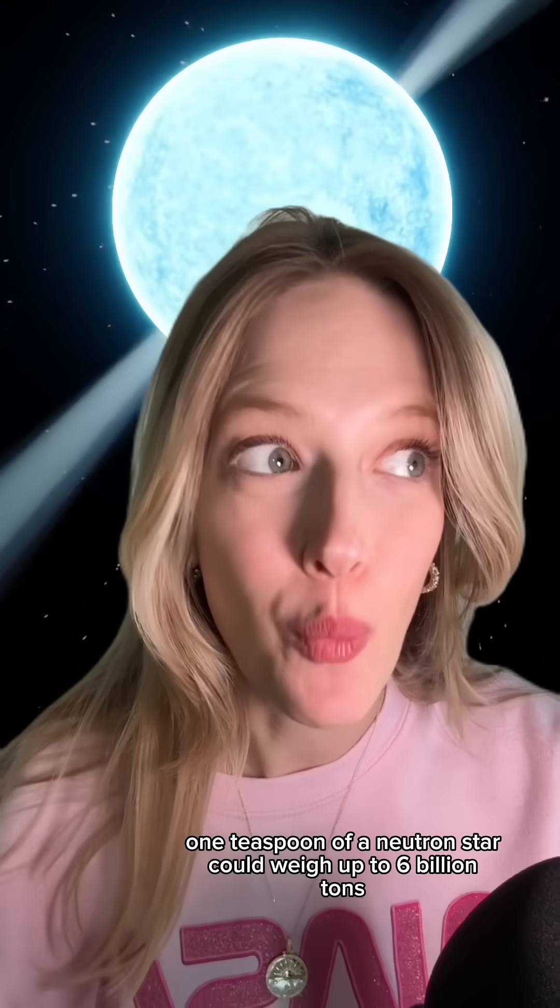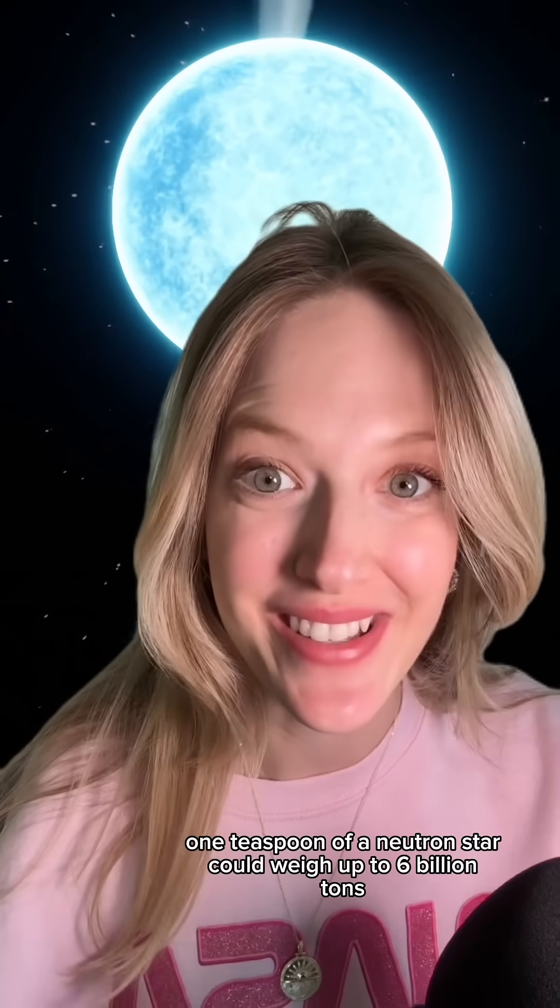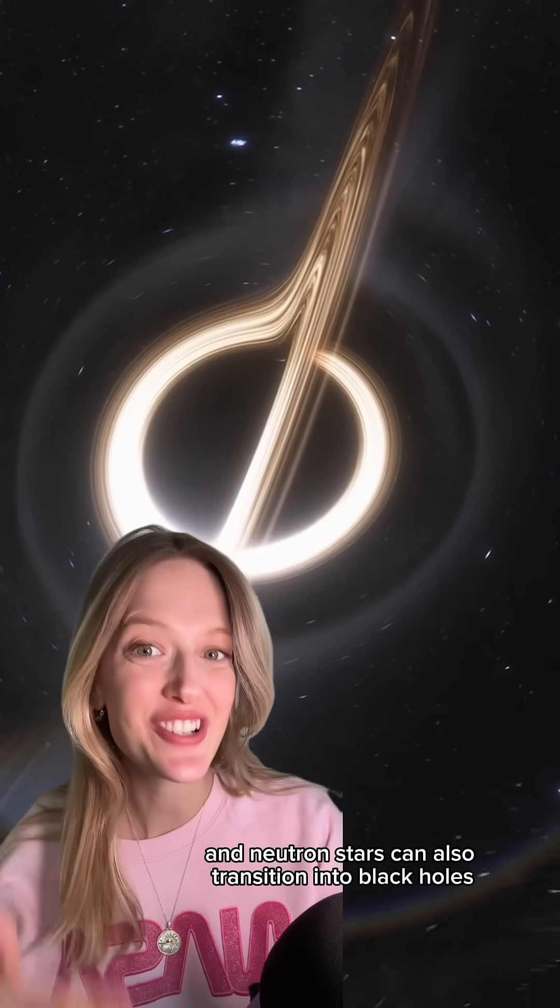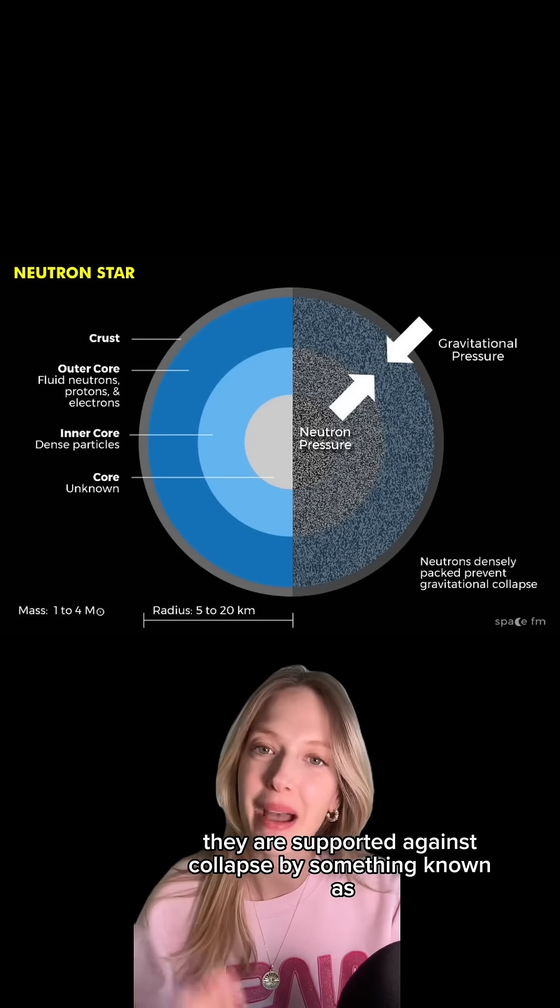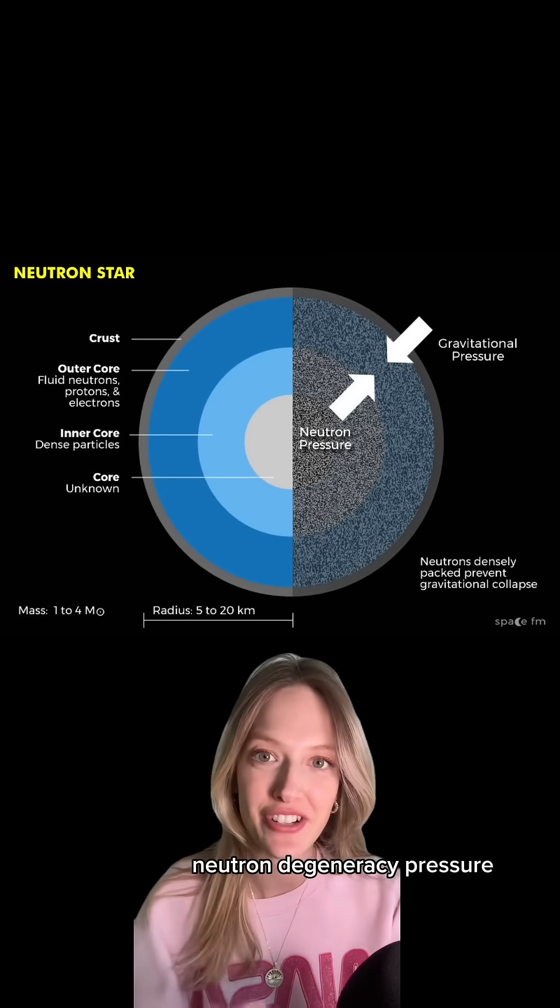Did you know that one teaspoon of a neutron star could weigh up to 6 billion tons? And neutron stars can also transition into black holes under certain circumstances. They are supported against collapse by something known as neutron degeneracy pressure.